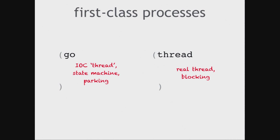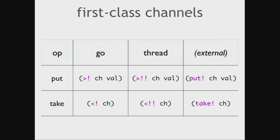You've got two kinds of processes. There are channel operations, and the channels are really simple: you can put things onto the channels and you can take things off of the channels. If you're working in a Go block, you use the single-bang put and take operations — those park rather than block. They can't block because they don't own a thread. The execution is suspended, the state is remembered, and when it can execute again it gets scheduled on a thread pool or whatever the underlying substrate is. The double-bang versions are the threaded versions — those will block.